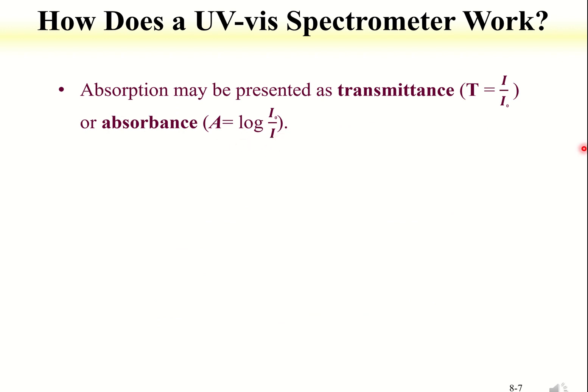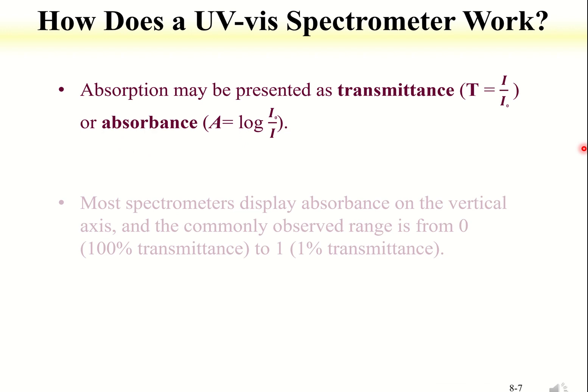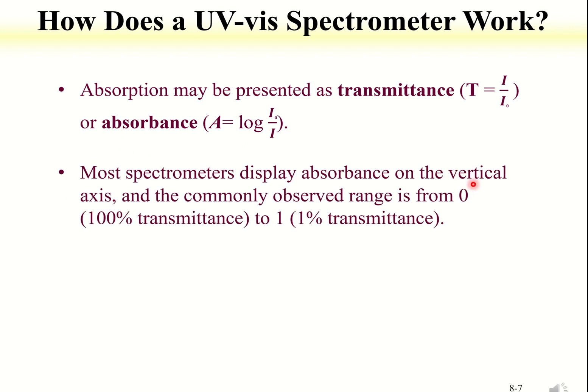In a typical UV-visible spectrum, the absorbance scale is placed on the y-axis to show the intensity of light absorbed by a compound over a range of wavelength. The higher the absorbance, the lesser light intensity is transmitted through a sample. In other words, the higher the transmittance, the lower the absorption.